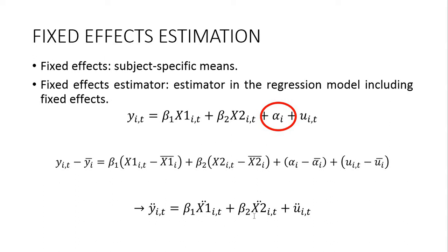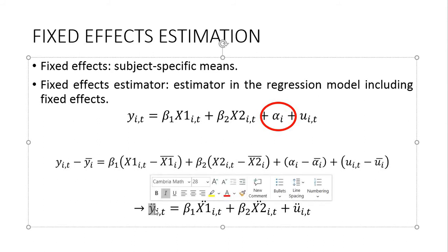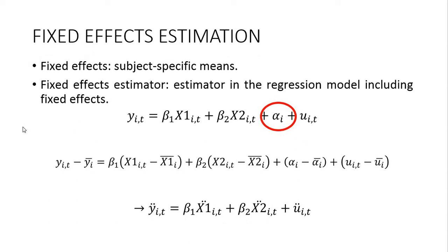As a result, our regression uses the demeaned variables: the difference between Y for entity i in period t and the average value of Y for that entity over the observation period, and the same applies to all other time-variant variables. If you include a time-invariant variable in a fixed effects model, it will always produce zero and will not be included in the regression, just like alpha_i. Therefore, you cannot include time-invariant variables in a fixed effects model.